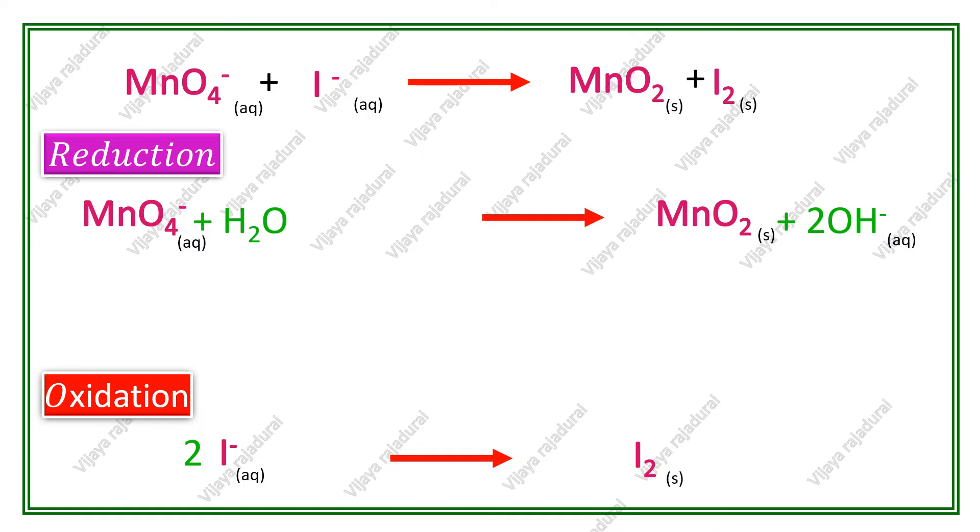But here also, there is some problem. If we count the number of oxygen on reactant side, we get only 5 oxygen atoms. So again, we have to balance the oxygen atoms. I am introducing 4 hydroxyl ions on product side. To balance these hydrogen atoms, I can add 2 water molecules on reactant side. Now, I am checking the number of oxygen atoms on reactant and product side.